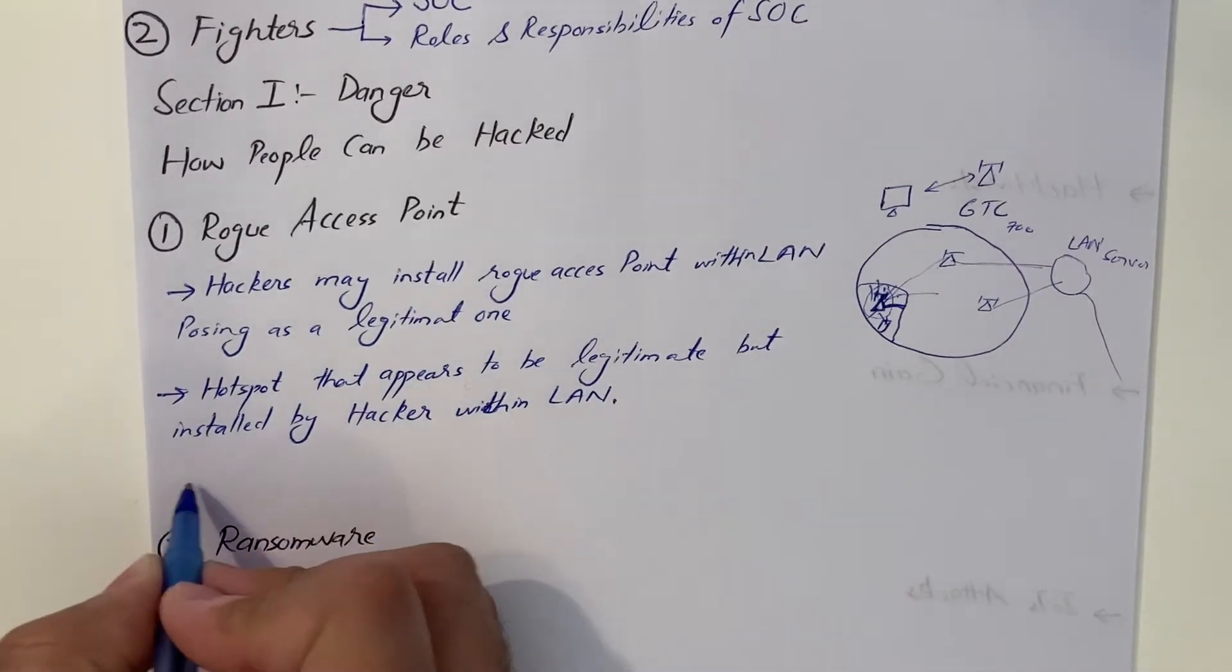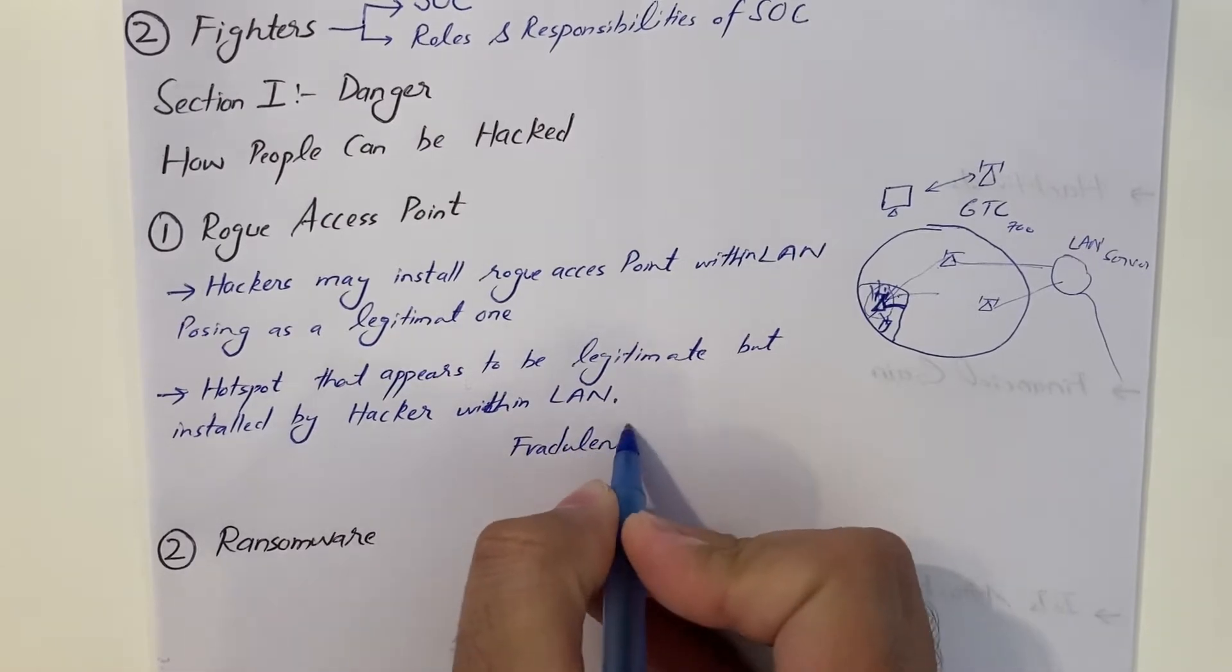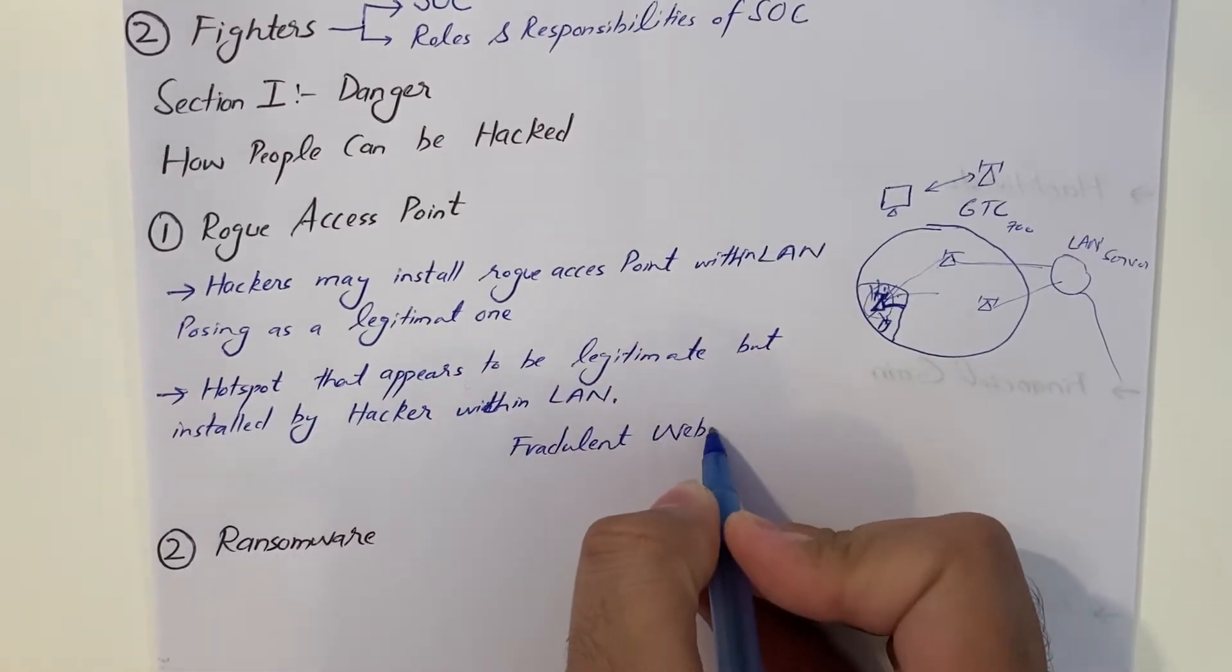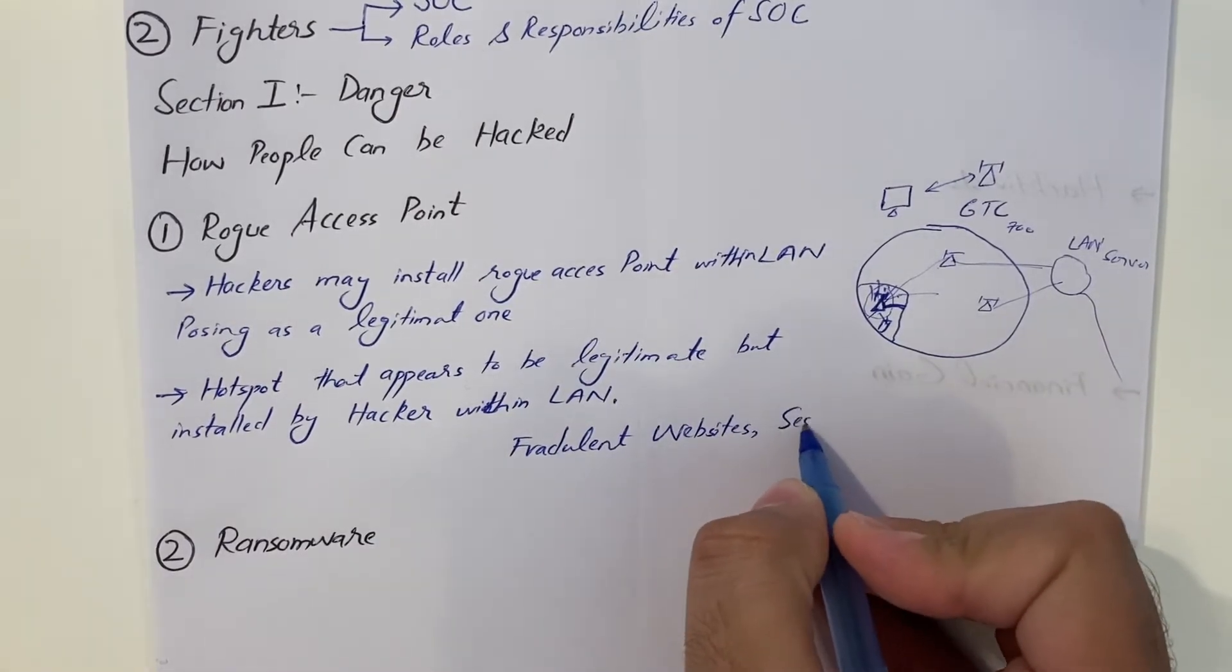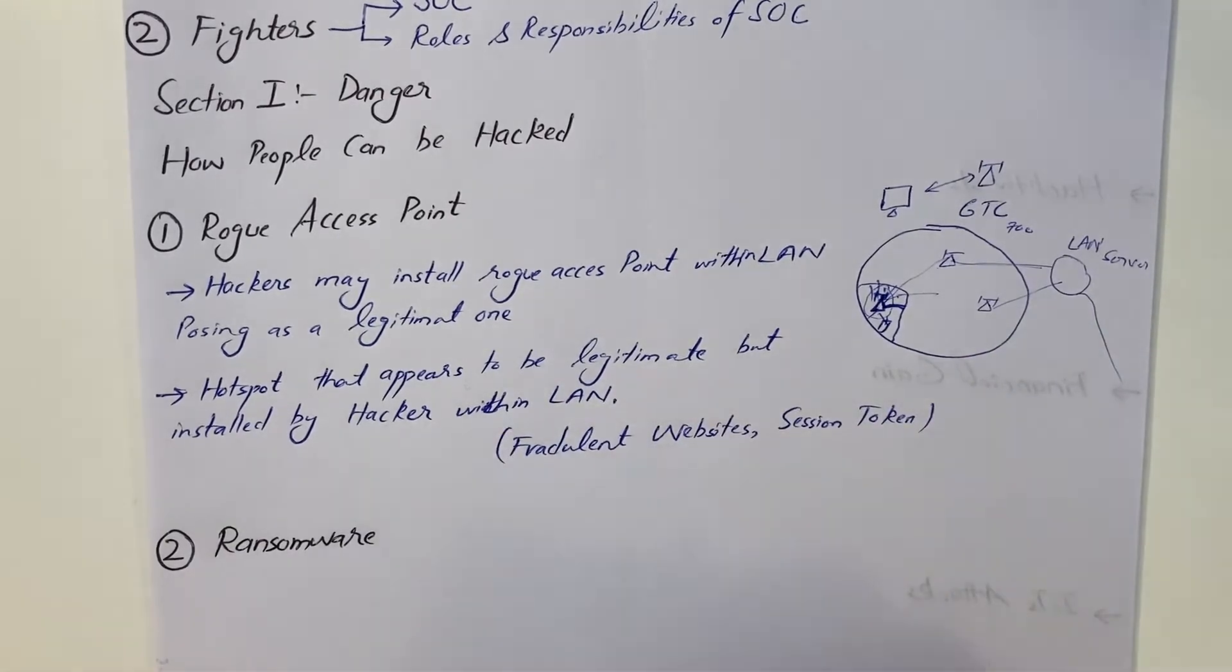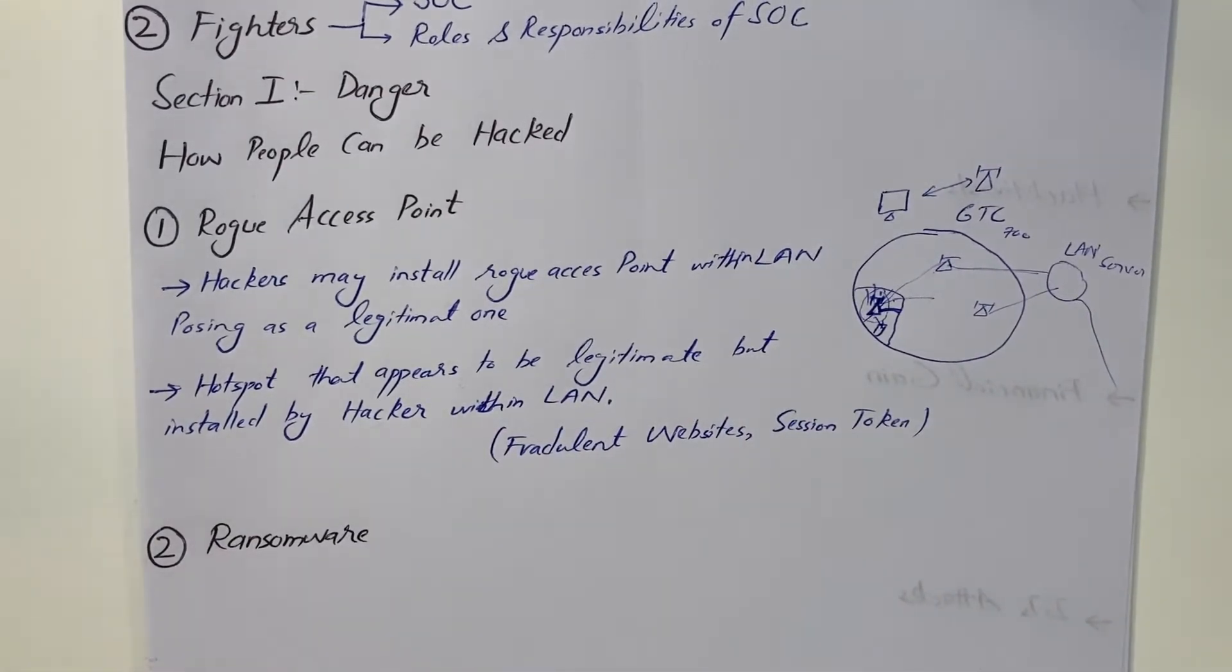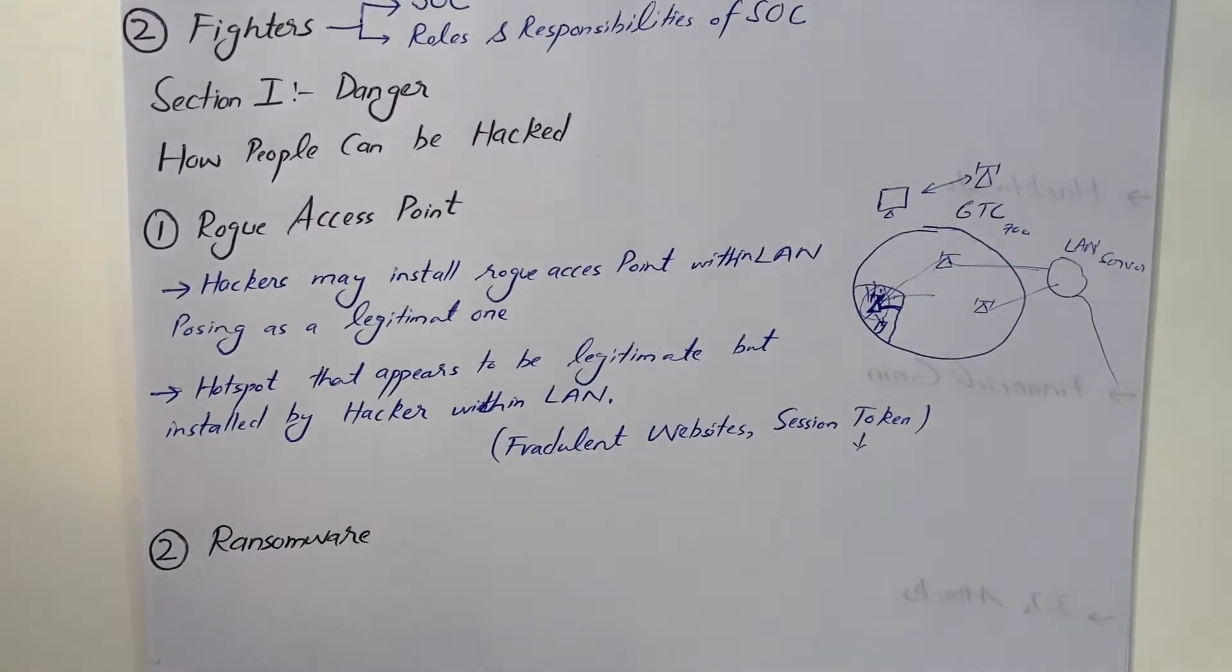Other than rogue access point, some people can also create fraudulent web pages, fraudulent websites. Some people actually steal the session token. If somebody can steal your session token, they can hijack your overall session. We'll talk about session token in our upcoming chapters.